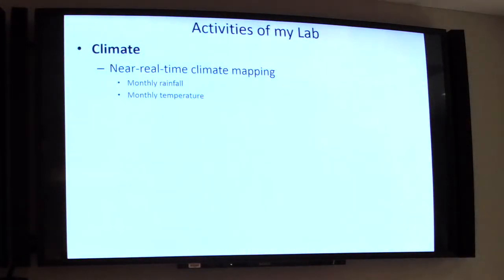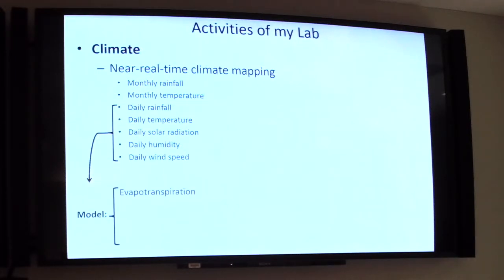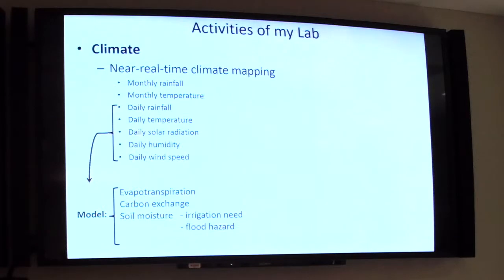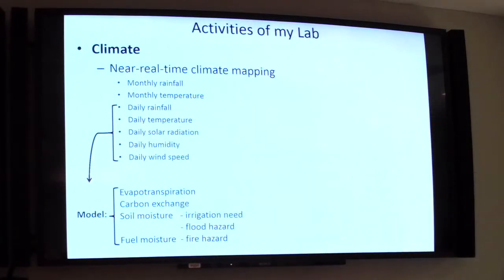Once the monthly rainfall map is completely sorted out, the next step is monthly temperature, then daily interval maps including daily rainfall, daily temperature, solar radiation, humidity, and wind speed. Once we do that, we'll be able to produce evapotranspiration maps near real time. That opens up many applications involving water balance, moisture availability in the ecosystem — carbon exchange modeling, irrigation, flood hazard, fire hazard, and many other applications. We're really excited about this.